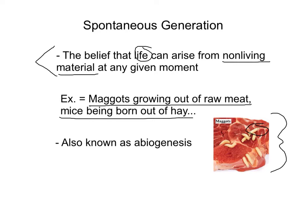This is also known as abiogenesis, meaning the opposite of biogenesis — that's what happens when you put an A in front of it. The term biogenesis is what we know to be true now: that life actually creates or is the beginning of more life. So how did we come to arrive at this belief in biogenesis?